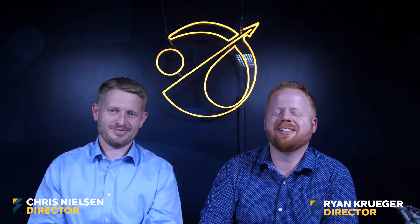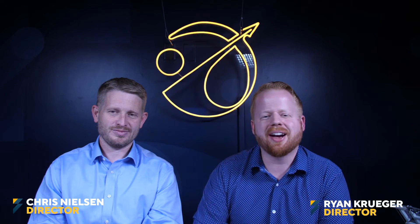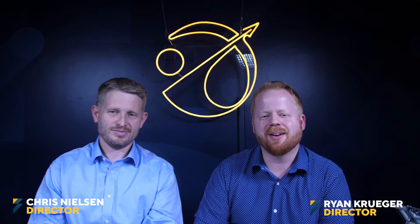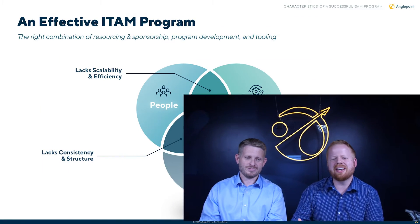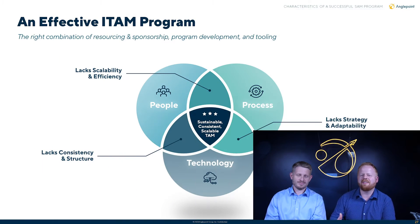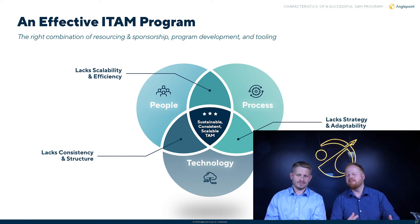Welcome to our seventh and final installment of our SAM 101 lightning course. Today we're going to review some of the characteristics of a successful SAM program. We can break this down into three key areas of an effective ITAM program: we have people, we have process, and we have technology.